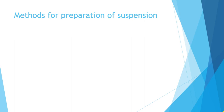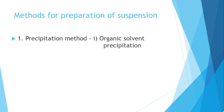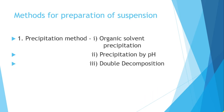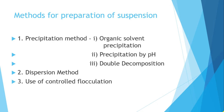Subscribe to my channel and press the bell icon to get the latest updates of upcoming videos. There are total three methods for the preparation of a suspension. The first one is the precipitation method — three precipitation methods are discussed: organic solvent precipitation, precipitation by pH, and double decomposition. The second is the dispersion method, third is controlled circulation, and fourth is the use of a structured vehicle.